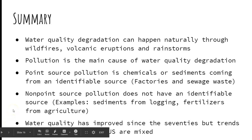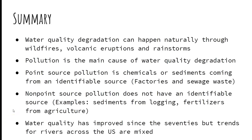In summary, water quality degradation can happen naturally through wildfires, volcanic eruptions, and rainstorms, but pollution from human activities is the main source — both in the US and internationally. That pollution can be point source, meaning chemicals or sediments from an identifiable source, or non-point source, such as sediments from road building or logging and fertilizers from multiple agricultural areas where it's hard to pinpoint the problem. Water quality has improved in the US, but there are still mixed trends on some rivers, which you'll investigate in an exercise in this module.